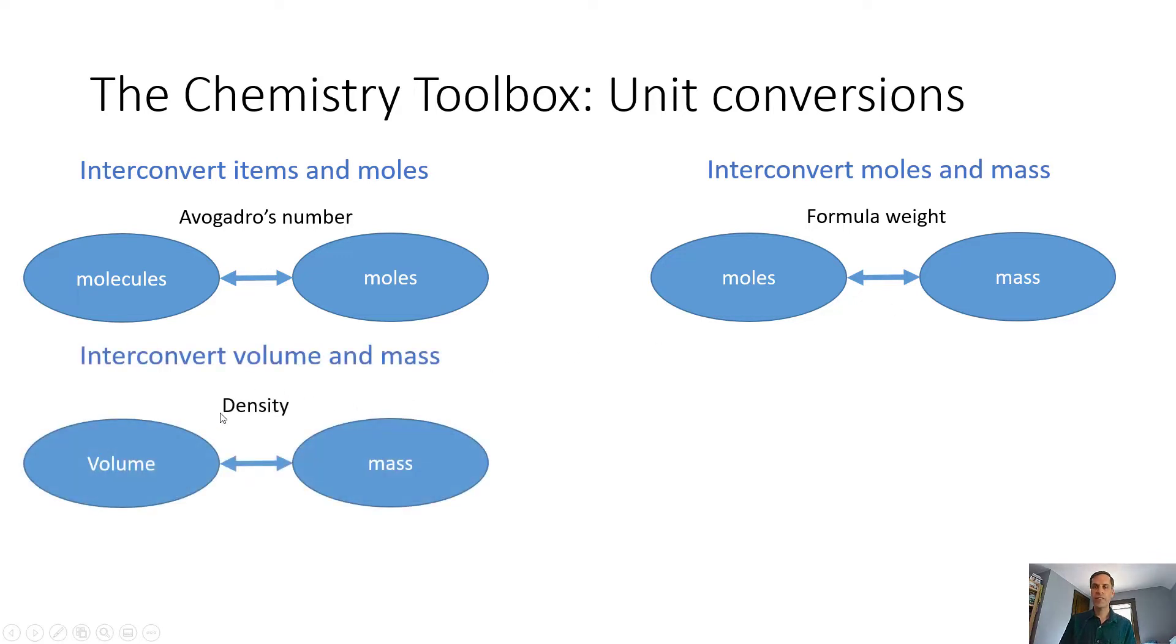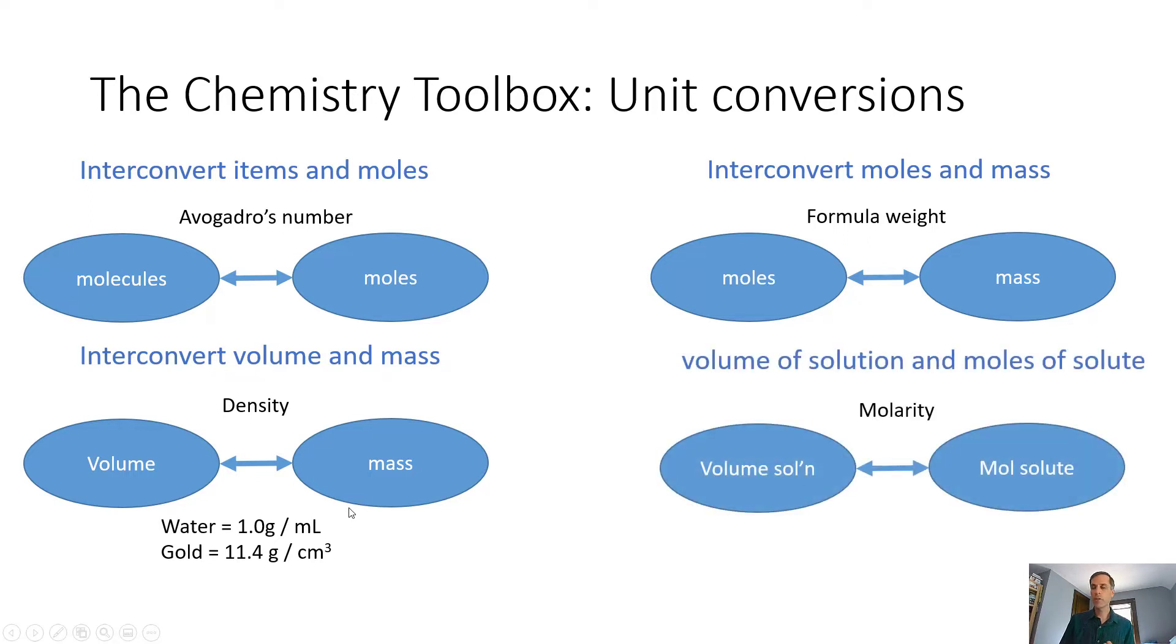We can do the same kind of idea with density. You're probably familiar with that. That talks about the number of grams per milliliter or grams per cubic centimeter. Here we have the values for water and gold. Those allow us to interconvert between volume of material and the mass of material.